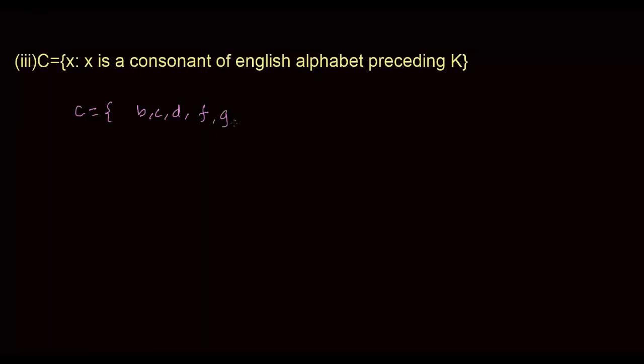So, B, C, D, F, G, H, I is again a vowel, so J and that is all. Even if you shuffle the order, it won't matter. So, that is the roster form of this set builder form.